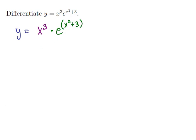Now notice that this is a product of two functions, so we're going to use the product rule. So the derivative is going to be the derivative of the first term times the second, times e to the x squared plus 3,